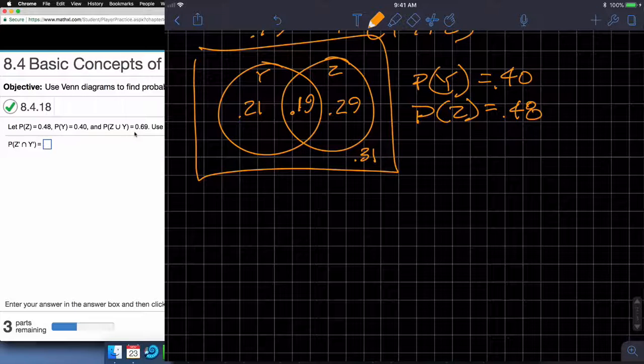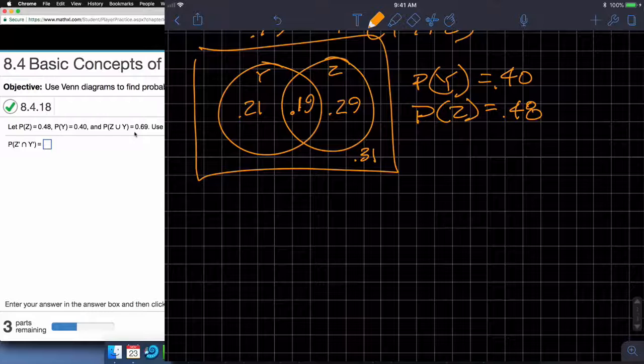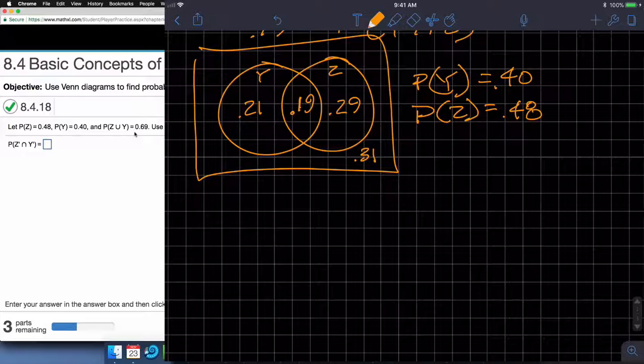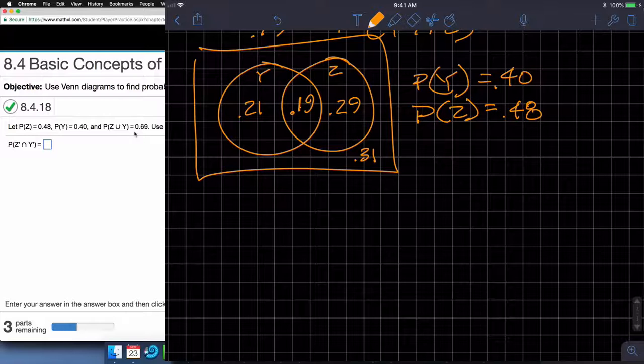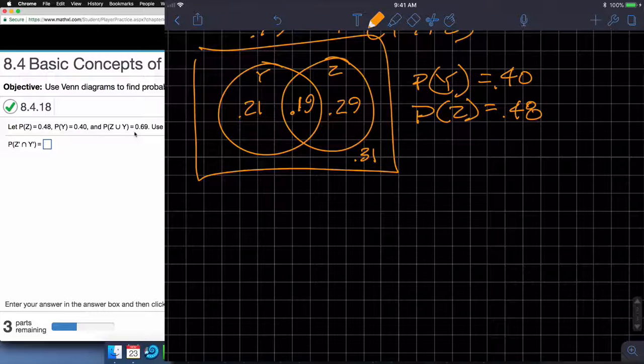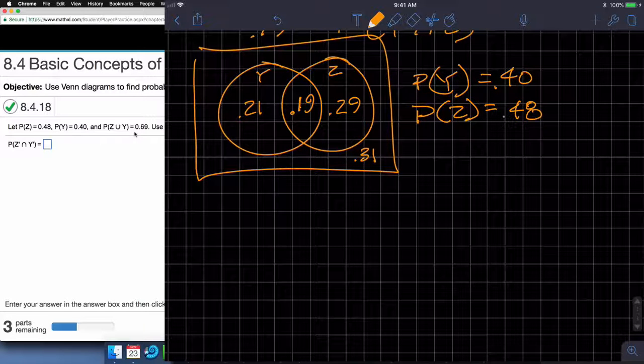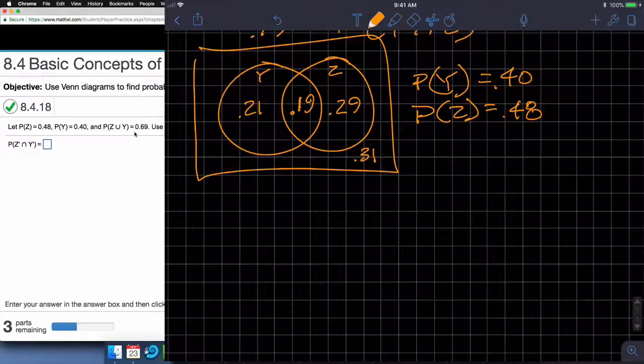And so we get a total of 1. So that's how you'd fill out the Venn diagram. And then using the similar same method, find the intersections, the unions, intersection of the complements, the unions of the complements. All that stuff is pretty much exactly the same. Filling out the Venn diagram was what was different. Hopefully that was helpful. Take care. Bye.